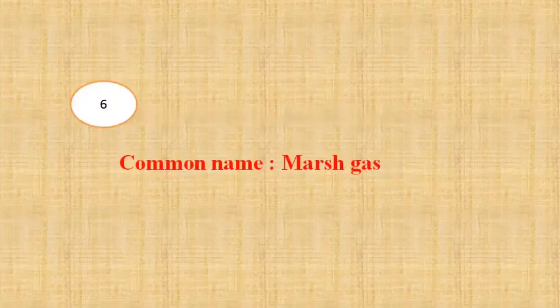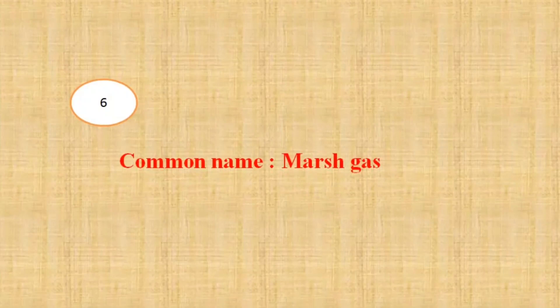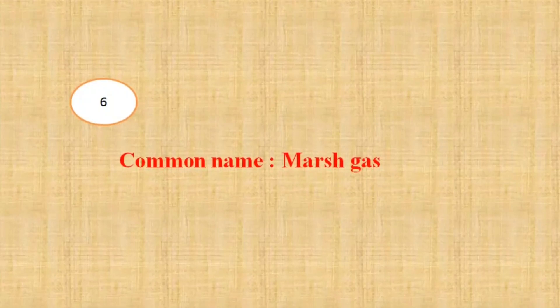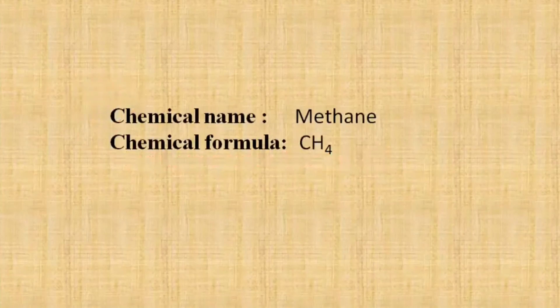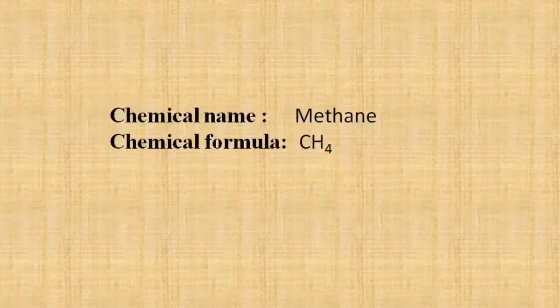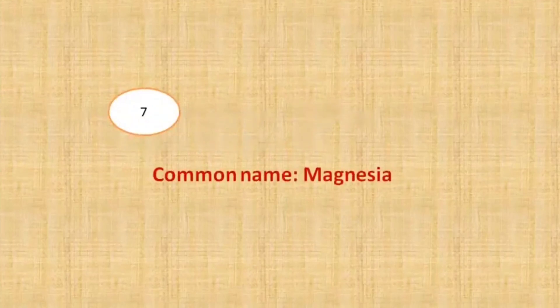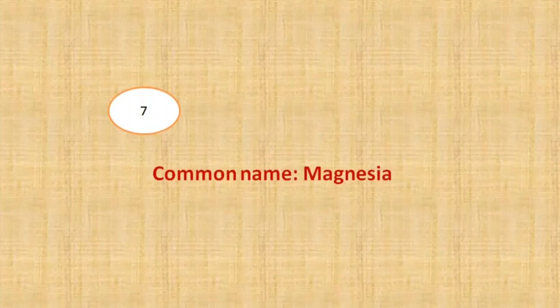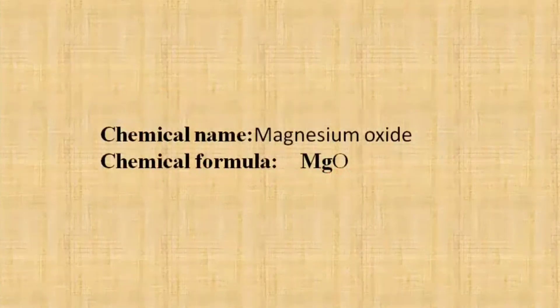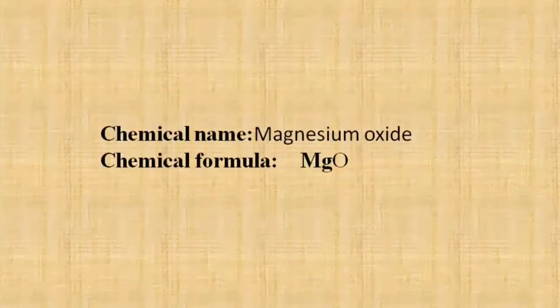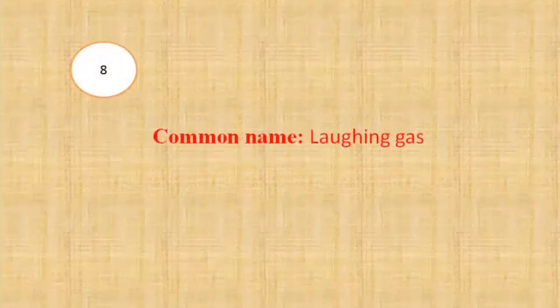Our next question is the chemical name of marsh gas. The chemical name of marsh gas is methane, that is CH4. What is the chemical name of magnesia? Magnesium oxide, that is MgO.